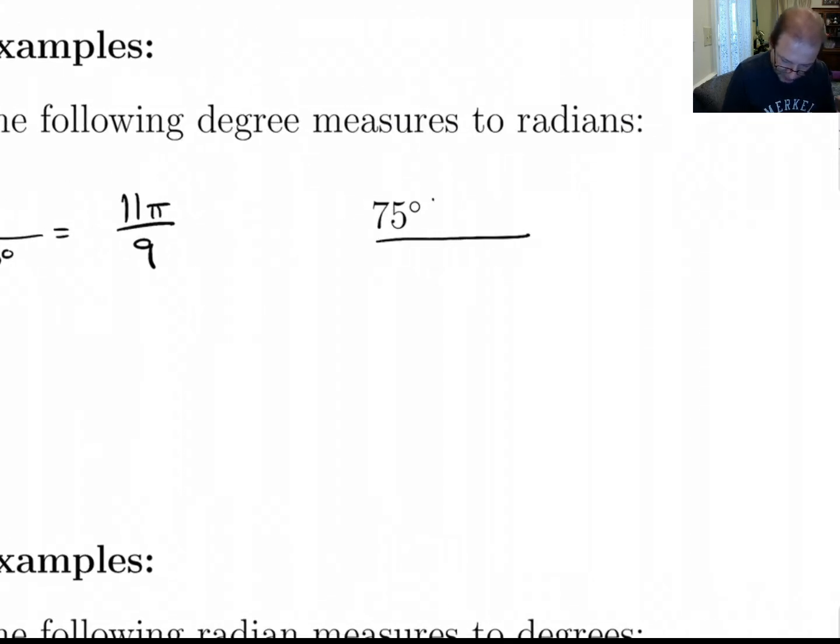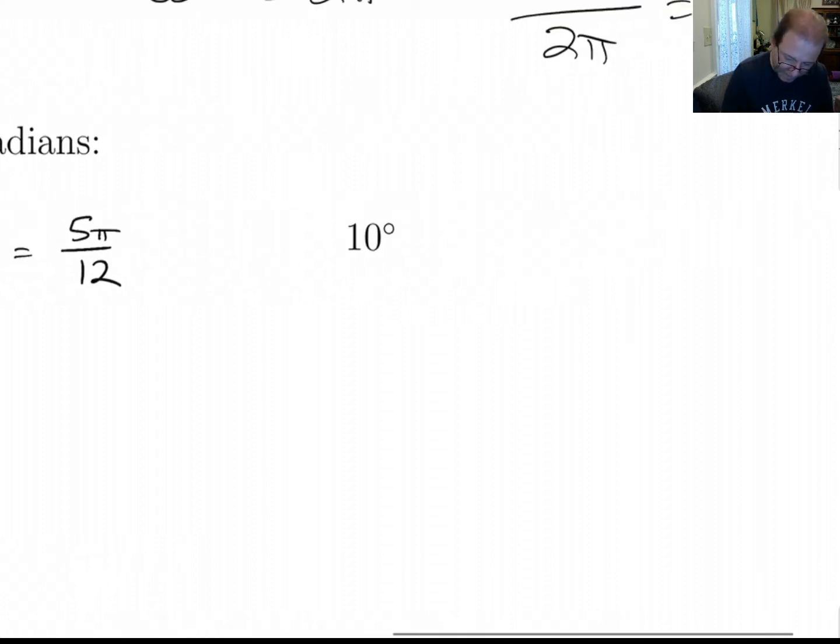75 degrees. If I multiply that by 360 under 2π, that's 150 on top, 360 on bottom. That's 5π/12. And 10 degrees. Well, if you multiply that by 360 under 2π, you get 20 over 360, which is 1/18. So this is π/18 radians.